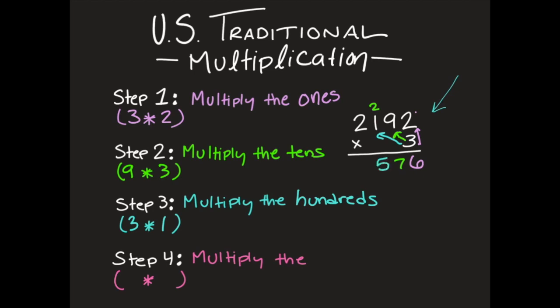And then finally, I need to multiply the thousands. So I'm going to take my three and I'm going to multiply it by the number in my thousands place, which is a two. So it's really three times two. And when I do that, my answer is six. I'm going to go ahead and put that six in the thousands place. So when I'm done, my answer is 6,576.